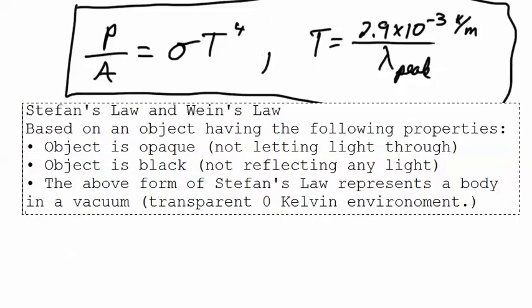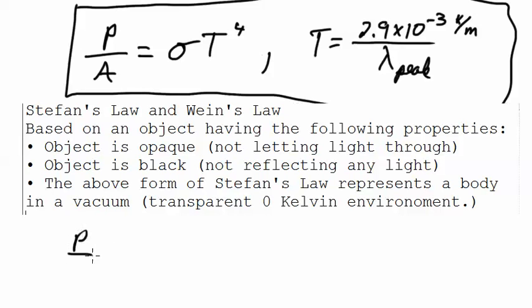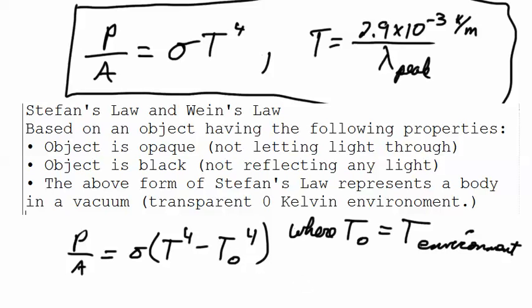Now a more general form of Stefan's law would be power over area equals sigma times T to the fourth minus T sub zero to the fourth, where T sub zero would be the temperature of the environment.